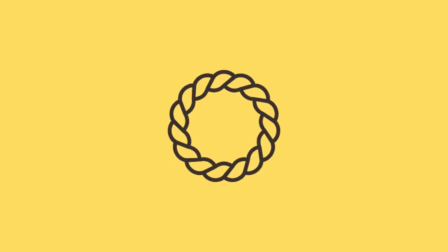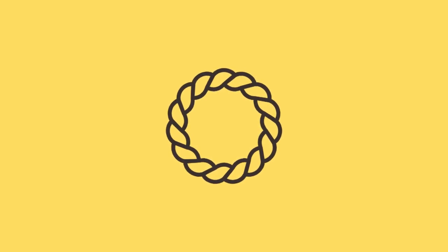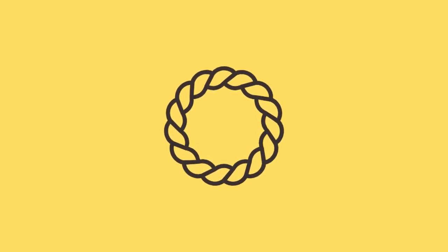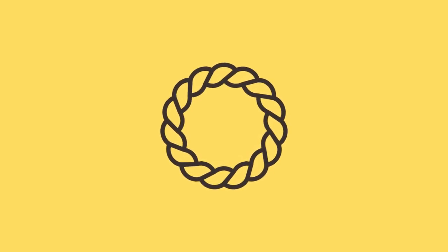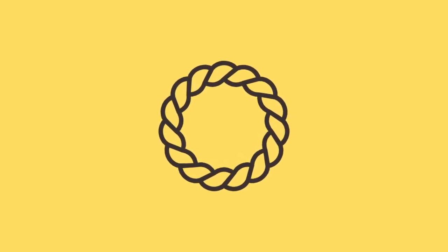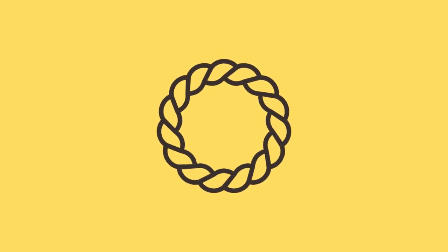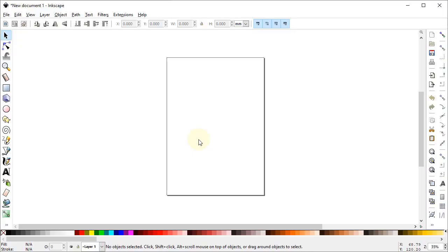Hi guys, welcome to Royal Logos. It's my pleasure to have you here and I really hope that you all are doing well. In today's tutorial we will draw this loop of braided rope. This type of rope design tutorial is very common in Adobe Illustrator, but in Inkscape you will find no such tutorial. Inkscape is a powerful alternate of Adobe Illustrator but it also needs some extra tips and tricks, so in today's tutorial we will use such a trick to design this braided rope.